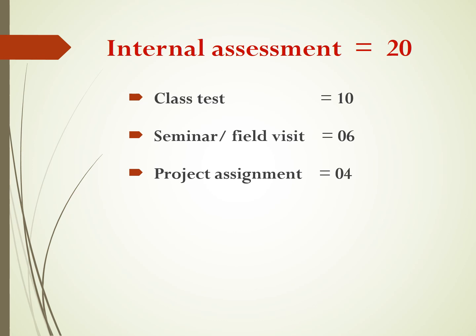So if you complete these three tasks successfully — that is class test, seminar, and project assignment — then you can get the full credit of 20 marks as part of continuous internal assessment. In theory you have to cover all the syllabus and there are 80 marks for the theory paper. Thus, 80 plus 20, the theory paper will have 100 mark scoring.